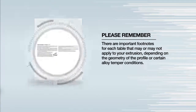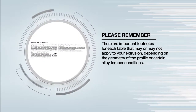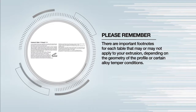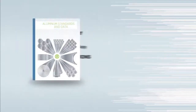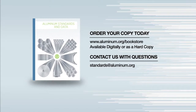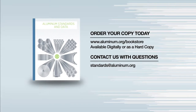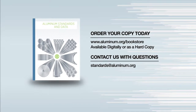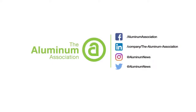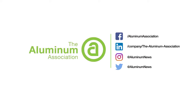There are important footnotes for each table that may or may not apply to your extrusion, depending on the geometry of the profile or certain alloy temper conditions. Get your copy of Aluminum Standards and Data, which contains the tables covered in this video, from the Aluminum Association's bookstore — available in U.S. or metric units. Don't forget to subscribe to our YouTube channel and engage with us on social media. Thanks for watching.